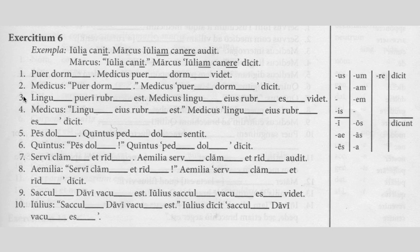I'll also give you number three. This is about the boy's tongue being red, and now the doctor sees that his tongue is red. Direct statement: 'lingua pueri rubra est.' Now the doctor sees that his tongue is red — we use accusatives and infinitives: 'medicus linguam eius rubram esse videt.'